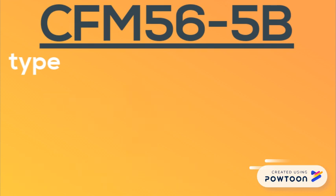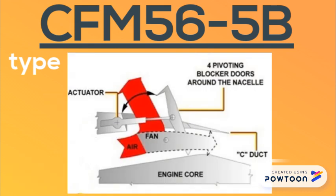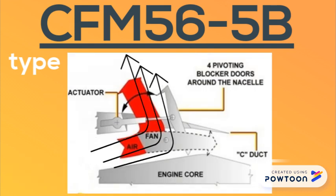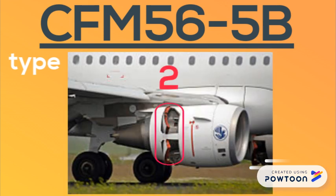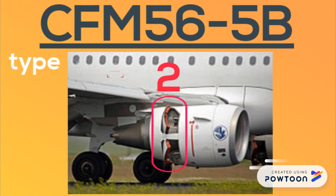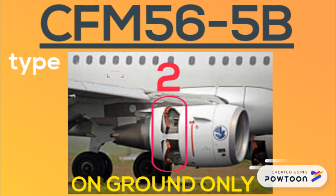The thrust reverser system type is of the aerodynamic blockage type. It consists of four pivoting blocker doors which stop and redirect fan discharged airflow. Two doors are installed on each engine sea duct, and the thrust reverser operation is only possible on ground.